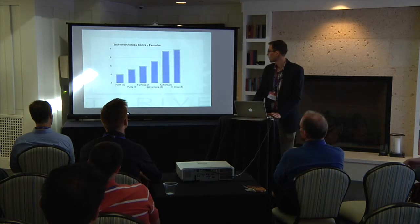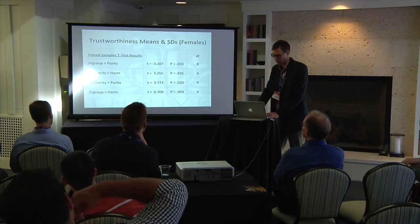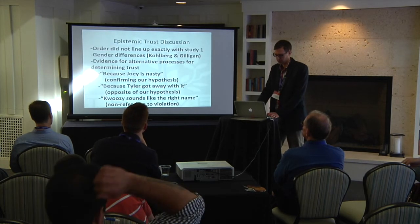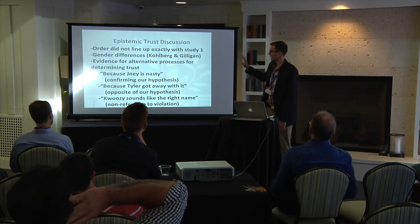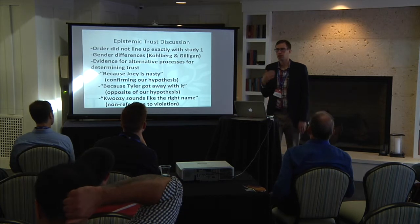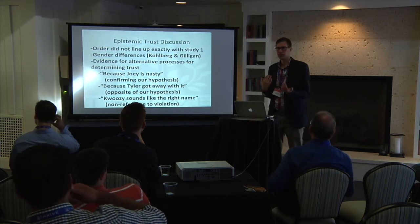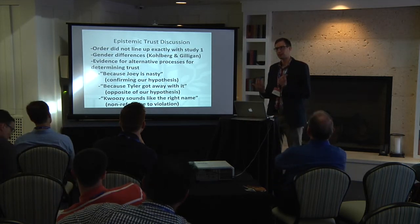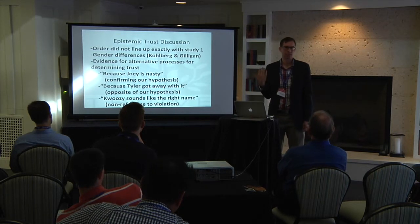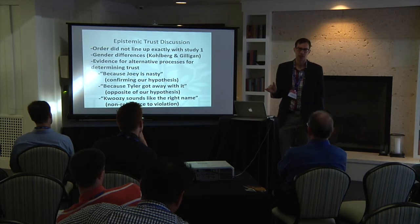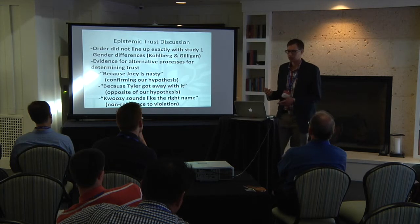The top two are significantly higher than the bottom two for the females as well. In conclusion, our order didn't line up exactly with Study 1. That means there's a relation between moral violations and trust — you can see some of that — but it doesn't map on directly. Just because someone does something bad doesn't automatically mean you're not going to trust them. It does mean you're less likely to trust them, but there are other things going on in that process.